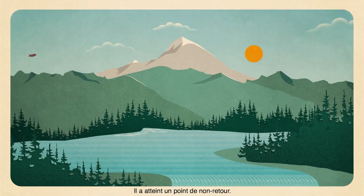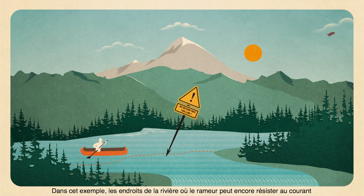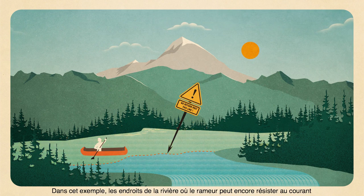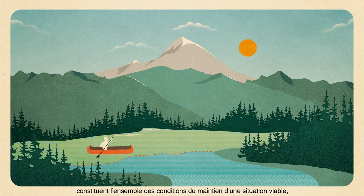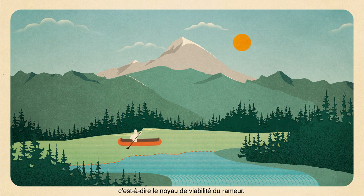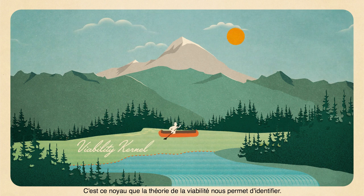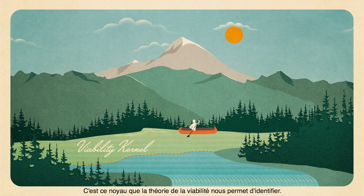He has reached a point of no return. In this example, the places in the river where the rower can still resist the current constitute all of the conditions for maintaining a viable situation — that is, the rower's viability kernel. It is this kernel that viability theory allows us to identify.